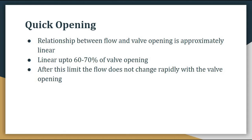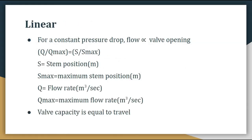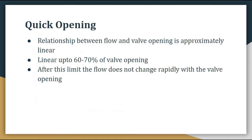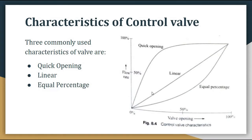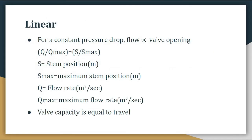The next characteristic is linear characteristic. In linear, for a constant pressure drop, flow is directly proportional to valve opening. As you can see from the graph, whatever percentage valve opening occurs, the same percentage of flow rate occurs. There is a direct relationship between flow and valve opening. The relation is: q by q-max equals s by s-max, where s is the stem position, s-max is the maximum stem position, q is the flow rate, and q-max is the maximum flow rate. In linear characteristic, valve capacity is equal to travel.